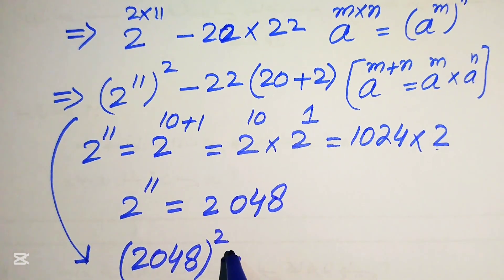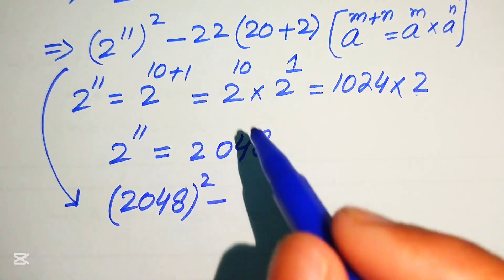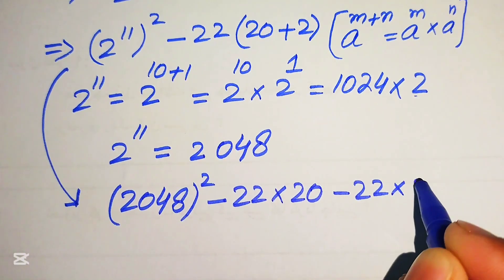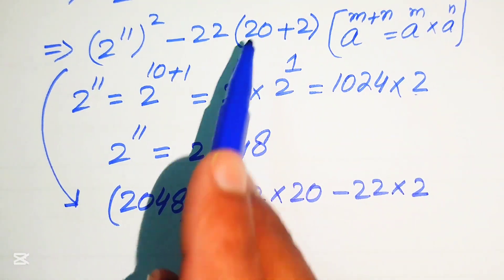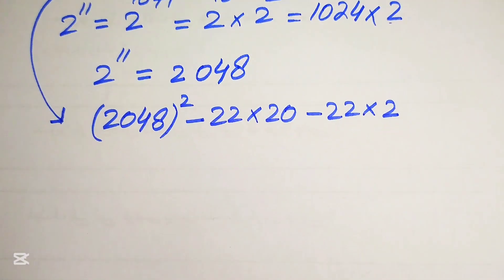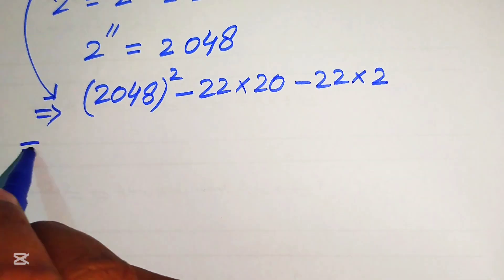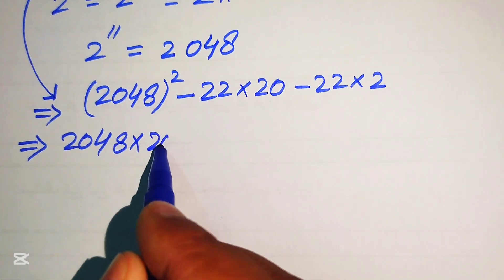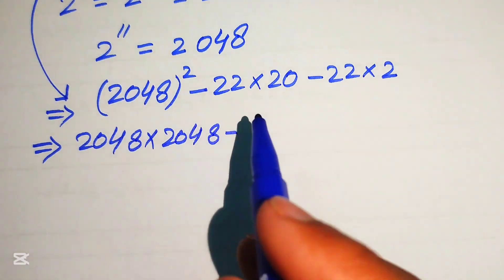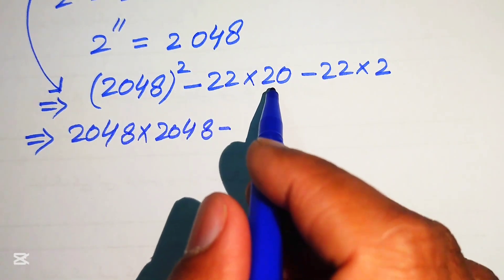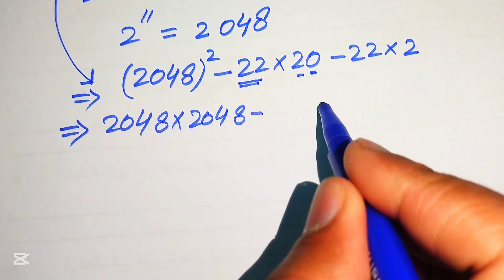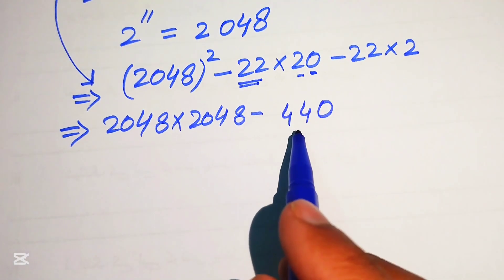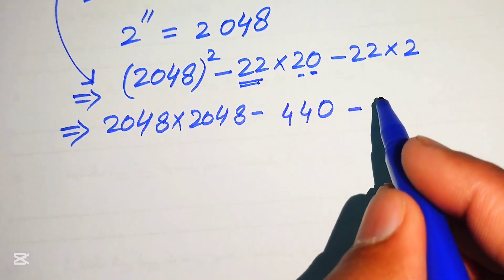The expression becomes 2048 whole squared minus 22 multiplied by (20 plus 2). We distribute the multiplication: 22 times 20 and minus 22 times 2. For 22 times 20: 20 times 0 is 0, 2 times 2 is 4, and 2 times 2 is 4, giving 440. And 22 times 2 equals 44. So we have 2048 squared minus 440 minus 44.